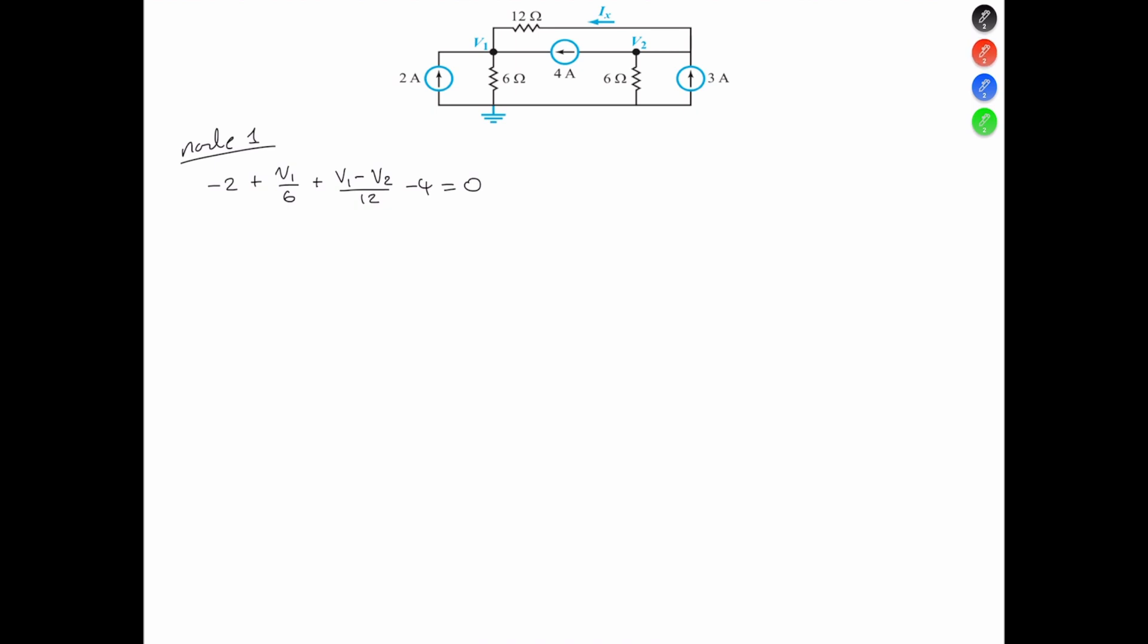Note that the KCL at V1, that generates V1 minus V2 all over 12, this is because the wire connecting the 12 ohms resistor, we could put that wire at V2, erase this section of it, because what happens is that the voltage at this terminal, let's call that V, is going to equal V2. Thus, that is why we say V1 minus V2 all over 12, that's how that KCL portion of the node equation is generated.